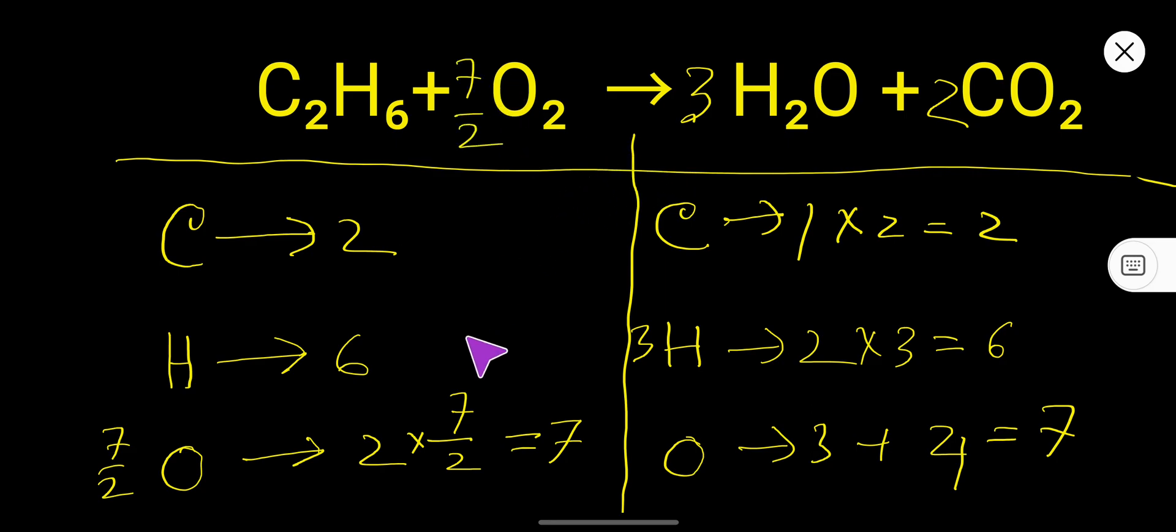But look, this is 7 oxygen, 7 oxygen, then 6 hydrogen, 6, and everything is balanced. So you can say that this is the balanced equation. But here we have a fraction.